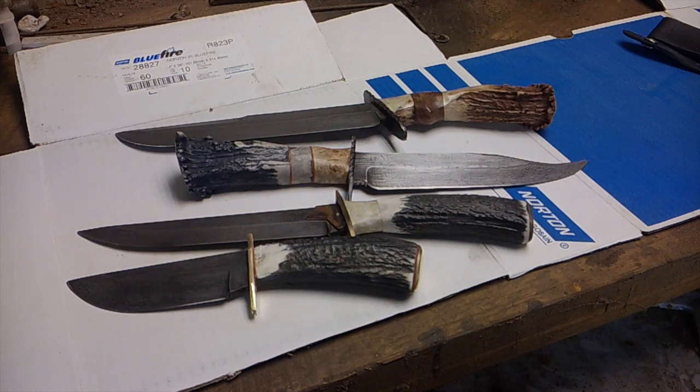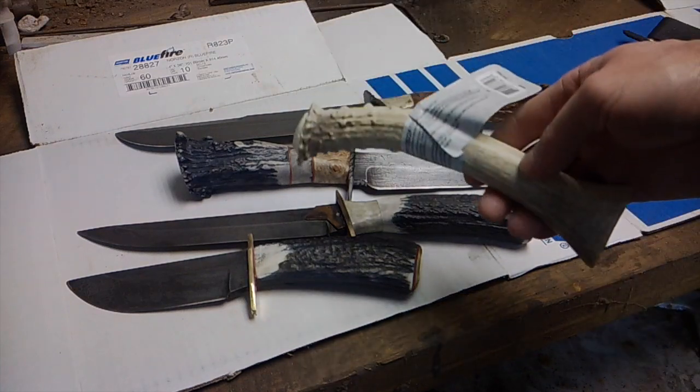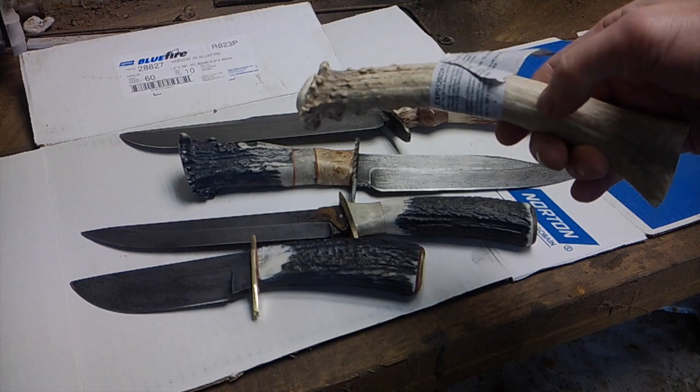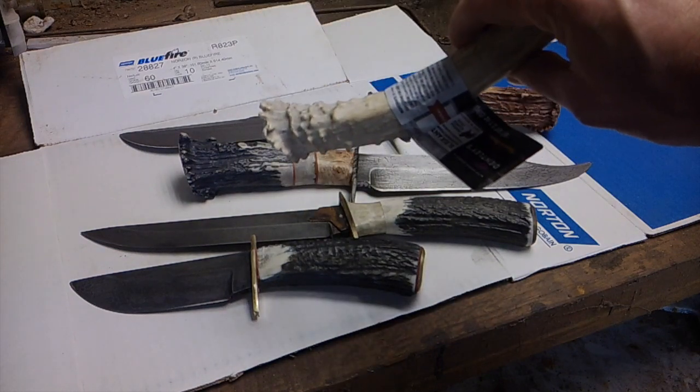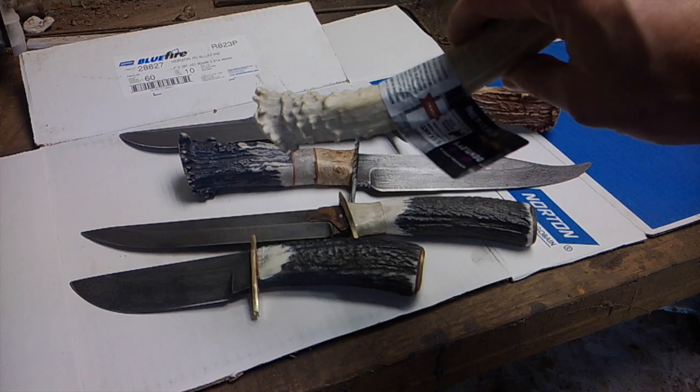Hey this is James McClendon with JMC Custom Knives. Recently I was asked to do a video on how I get my antler handles to look like I do. A lot of times you'll find these antlers and they come like this. Now this one comes from a pet store and it's pretty sun bleached. So all these handles here were sun bleached.